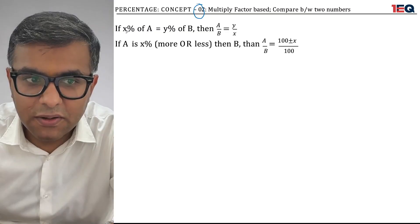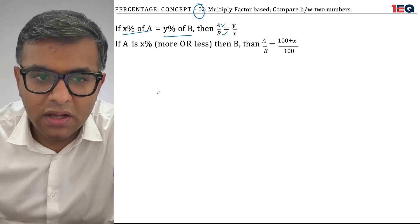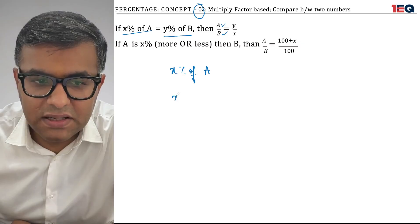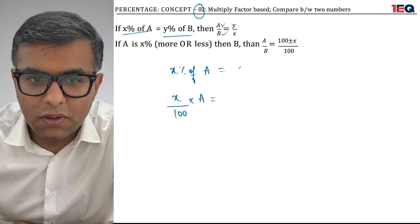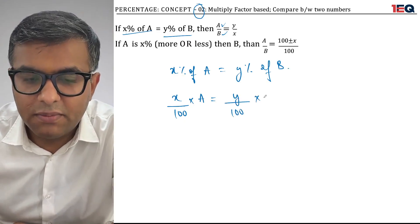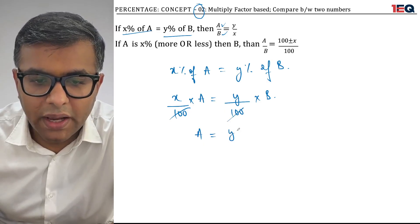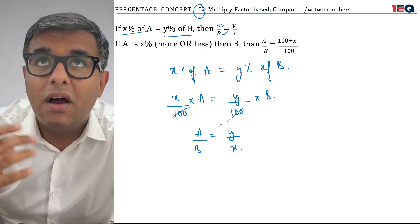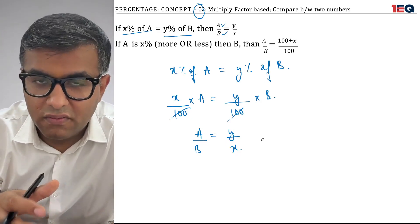Coming down to Concept 2: if x percent of A is equal to y percent of B, then A and B can be written as y:x. To break it down — x percent of A is x/100 × A, equal to y/100 × B. The 100s cancel, giving A/B = y/x. The values here are not the absolute values of A and B; they are the ratio values of A and B.